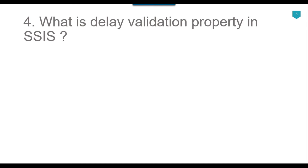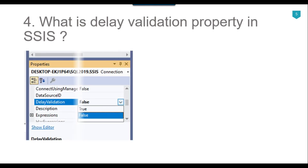The fourth question is what is the Delay Validation property in SSIS. In the OLEDB connections there is a Delay Validation property which is false by default, and you can set it to true. This property tries to validate the SSIS package before executing it. For example, if there is a data flow task fetching data from a table and that SQL Server table does not exist in the database.